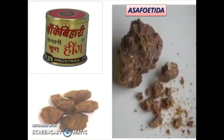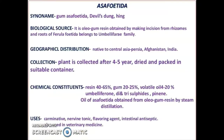Next is Asafetida. Synonym: gum asafetida, devil's dung, or hinga. Biological source: it is an oleogum resin obtained by making incisions from rhizomes and roots of Ferula foetida, belonging to family Umbelliferae. Geographical source: native to Central Asia, Persia, Afghanistan, and India. Collection: plant is collected after 4 to 5 years, dried and packed in suitable containers.